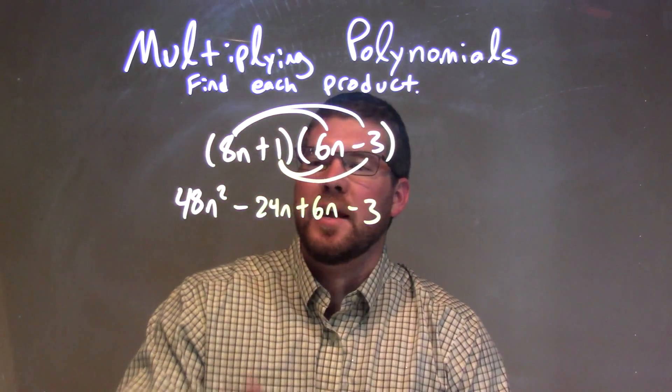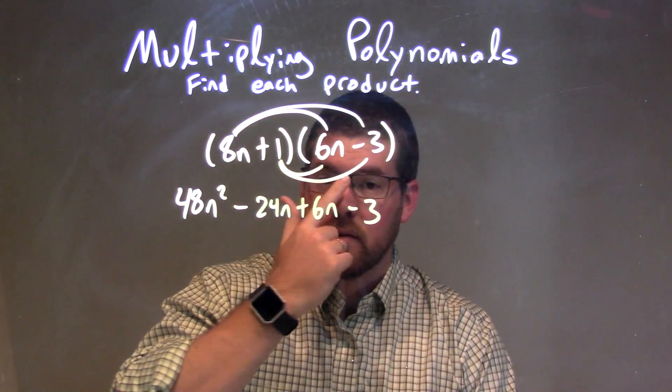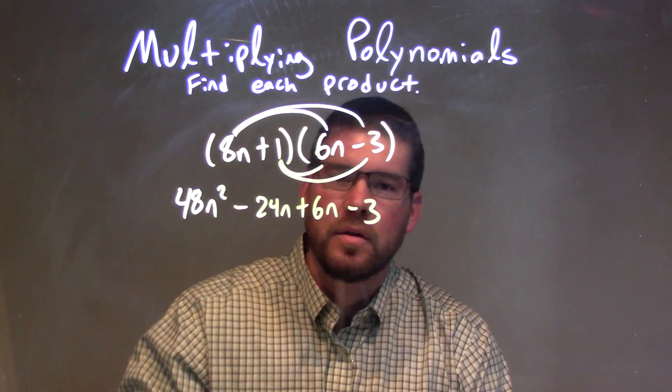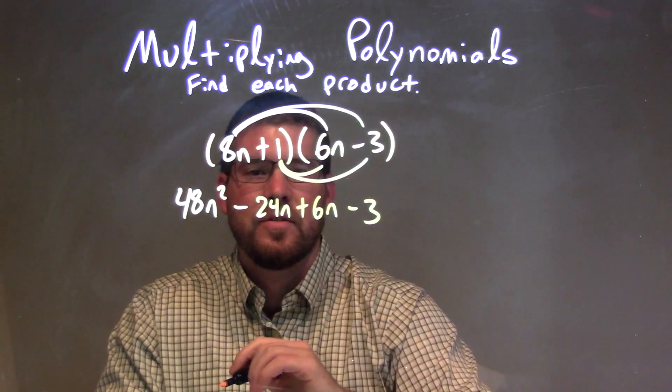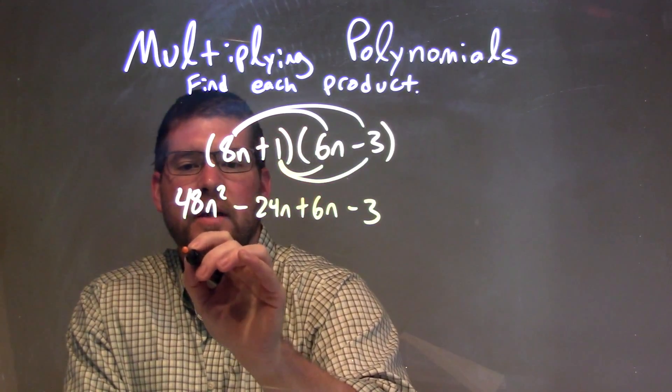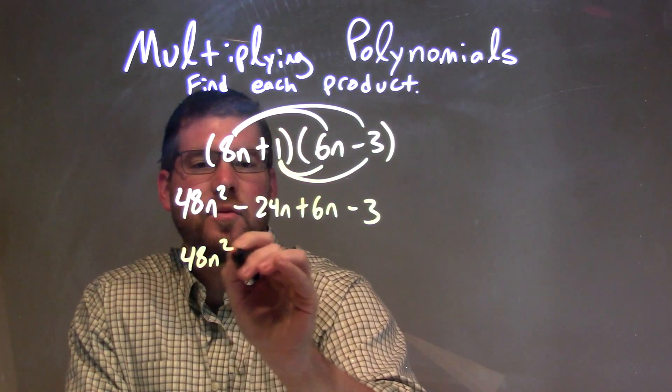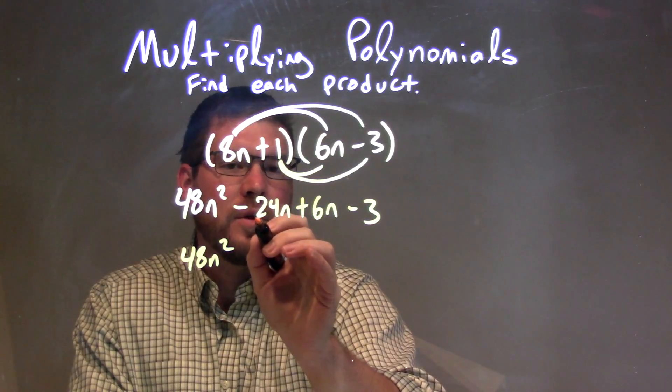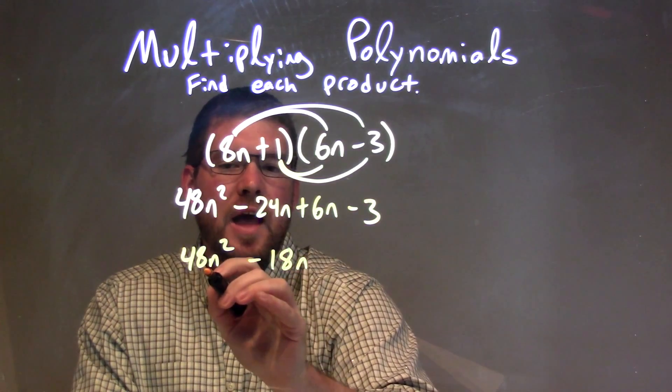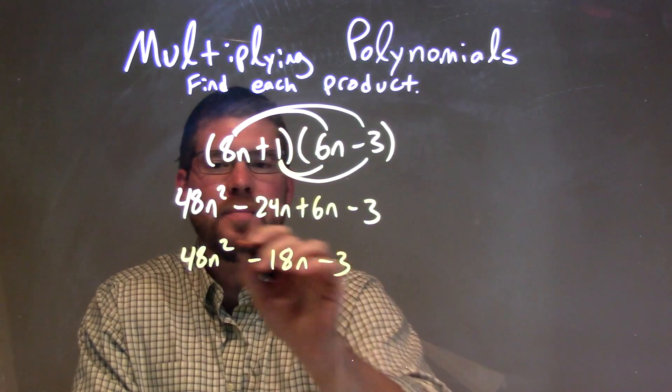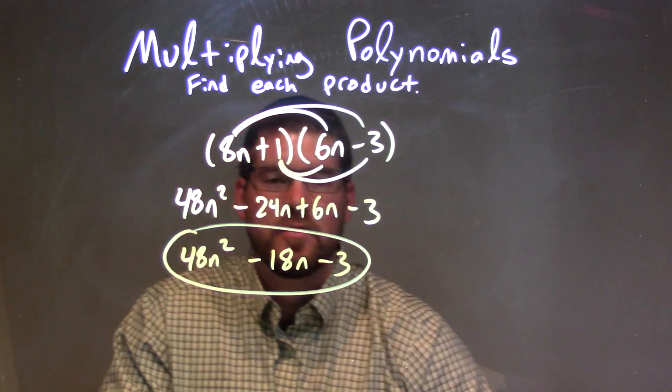So now we have 48n² - 24n + 6n - 3. We need to combine our like terms. When we combine the like terms, -24n and 6n, that's -18n. So our final answer is 48n² - 18n - 3, and there we have it.